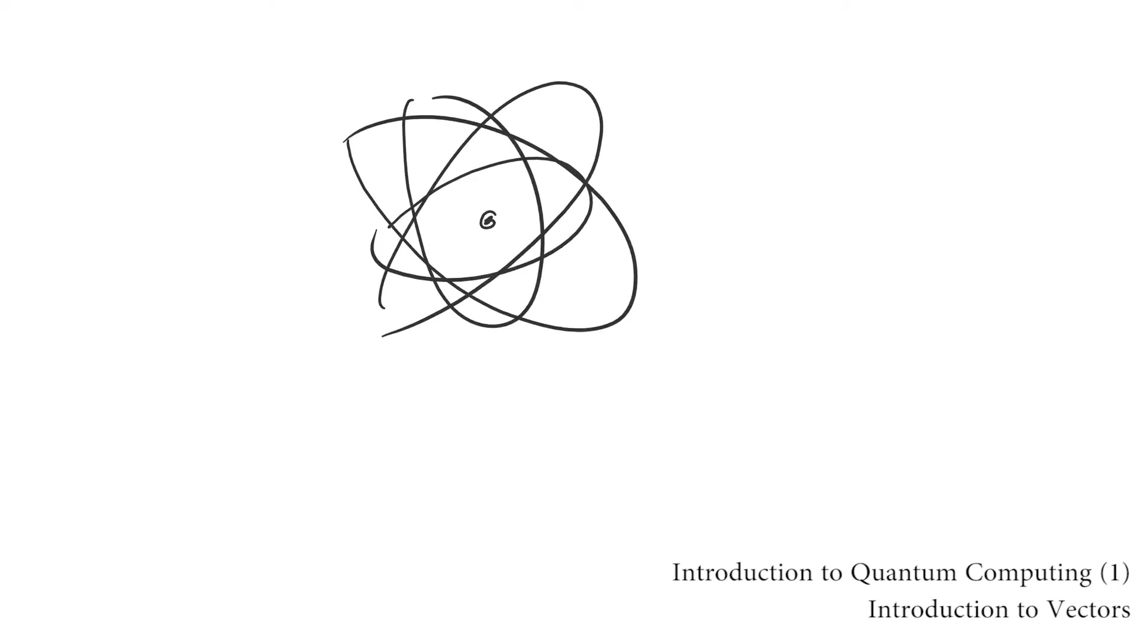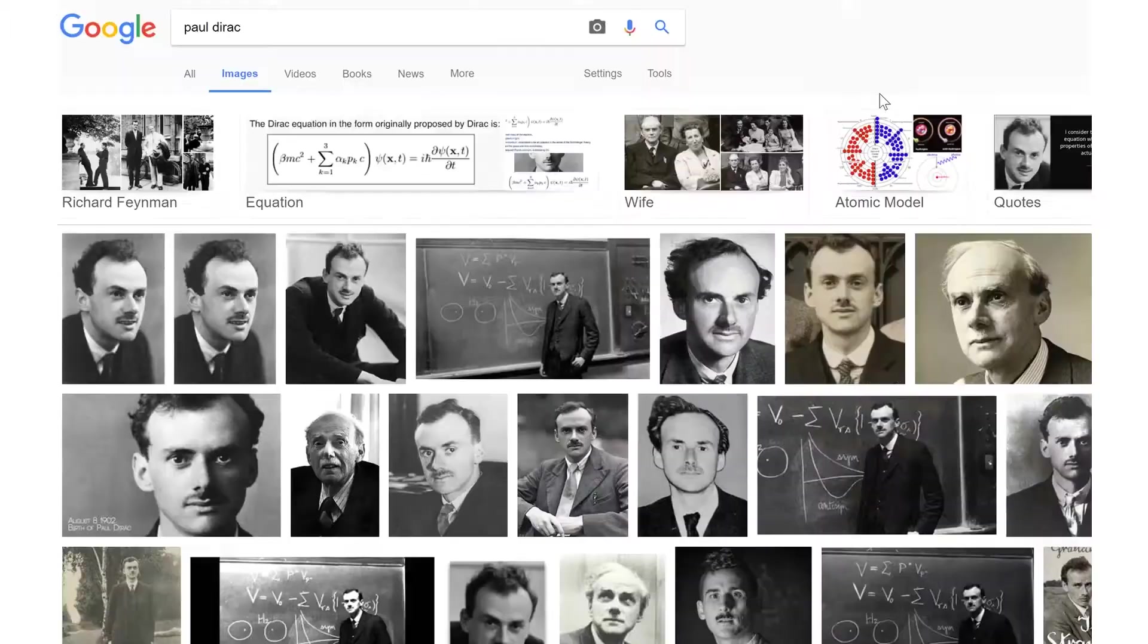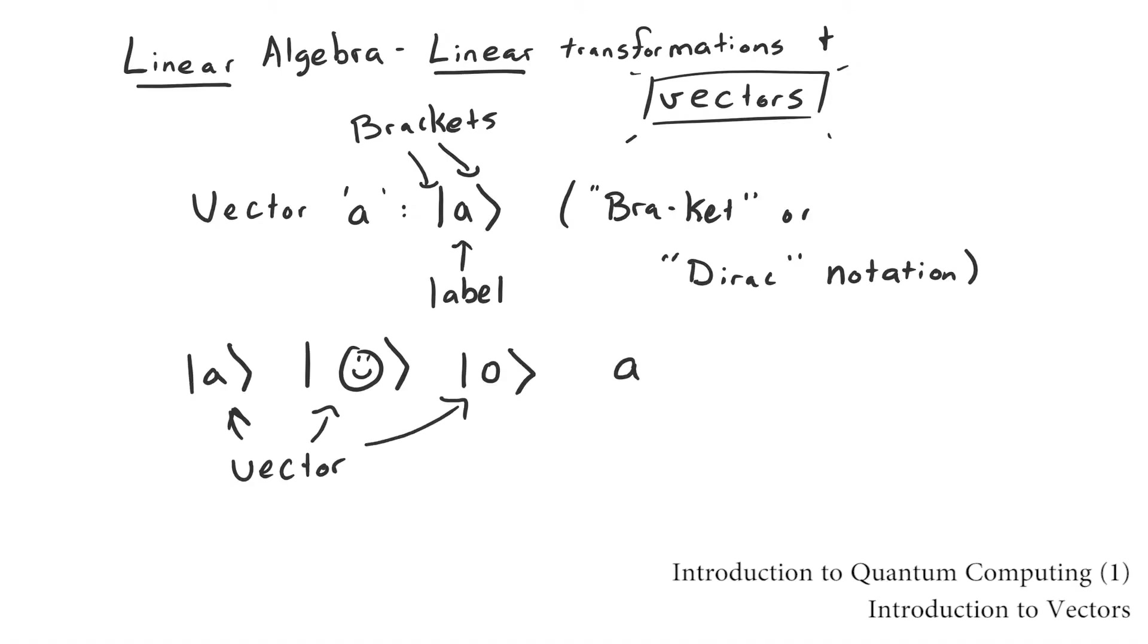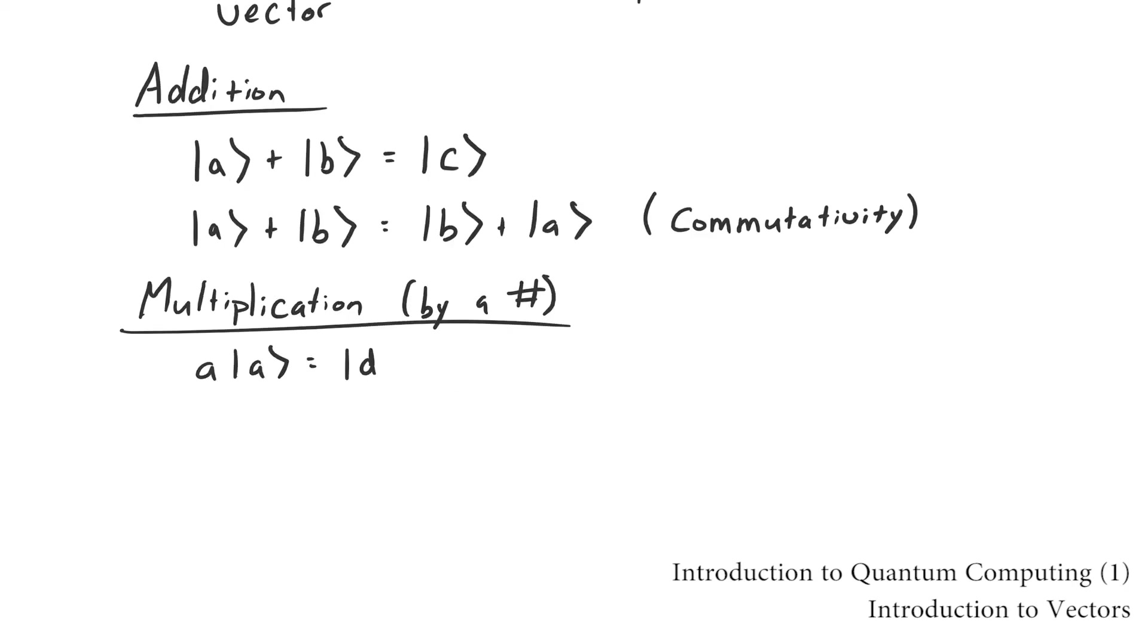The language of quantum mechanics is linear algebra, so this is where we're forced to start. Linear algebra is the study of linear transformations and the entities they act on, vectors. Vectors are abstract mathematical objects, only slightly less fundamental than numbers. If you see these angle brackets and something inside, that denotes a vector. Vectors can be added and their addition is associative and commutative. They can also be multiplied by numbers and this multiplication is distributive.